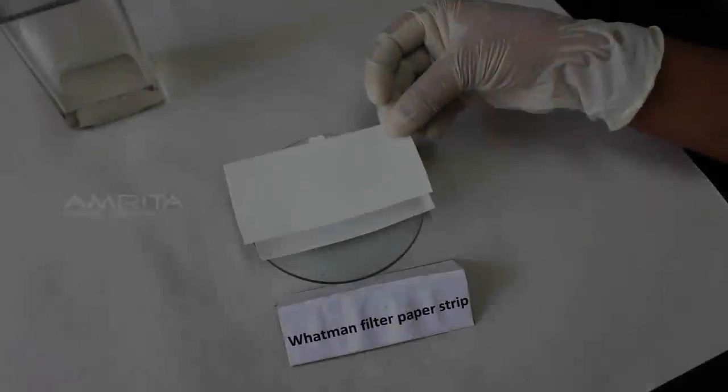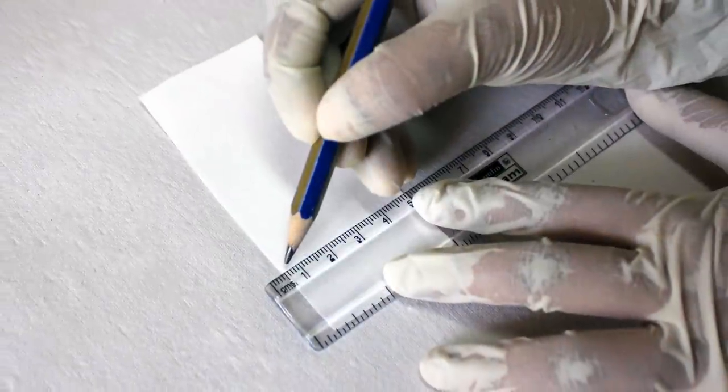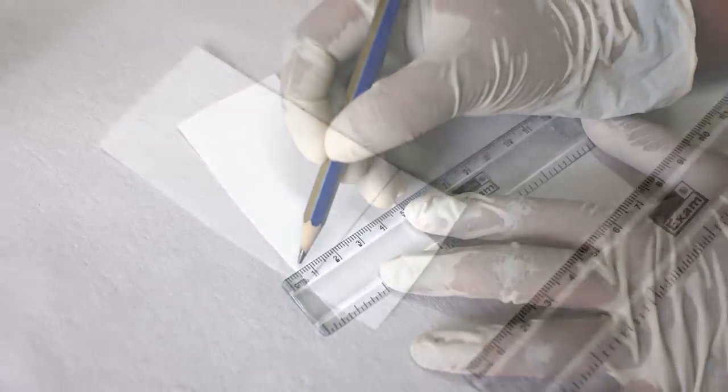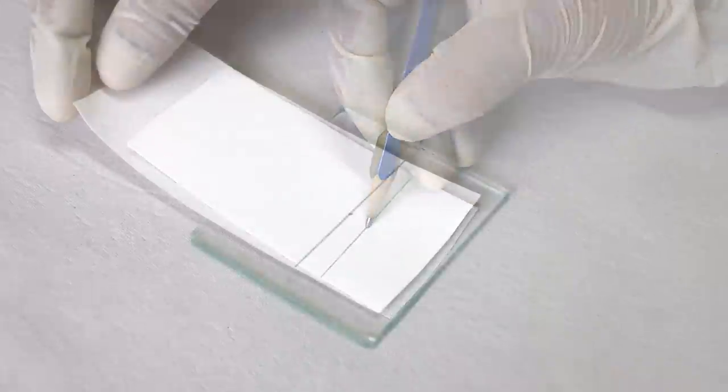Procedure: Take a Whatman filter paper strip and draw a line with a pencil above 2 cm from one end. Put a pencil mark at the center of the line.